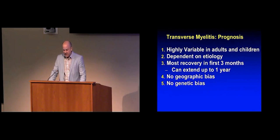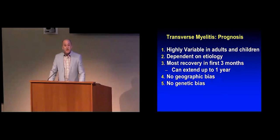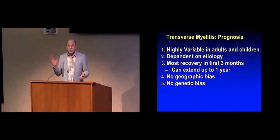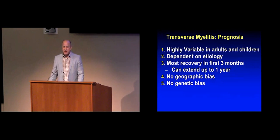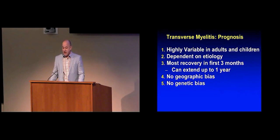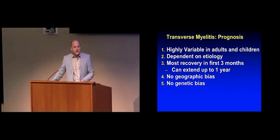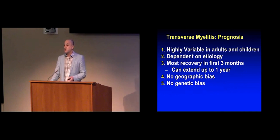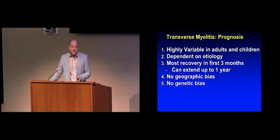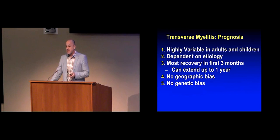Prognosis is highly variable — adults and children can have different levels of recovery depending on the etiology. In general, most recovery happens in the first three months but can extend as far as one year after onset. There's nothing about geography or genetics that predicts recovery, so unfortunately we often have to tell patients and families they must wait and see.